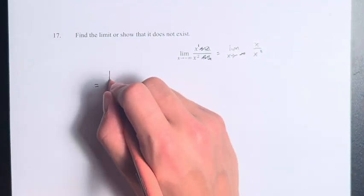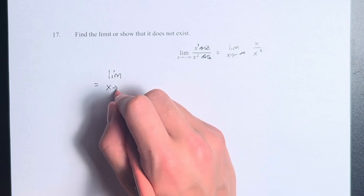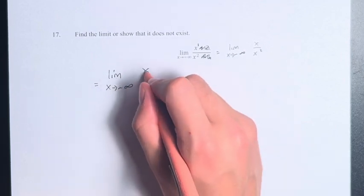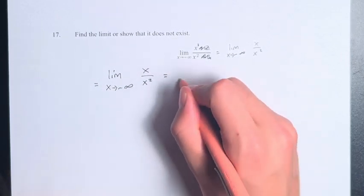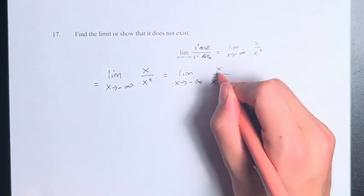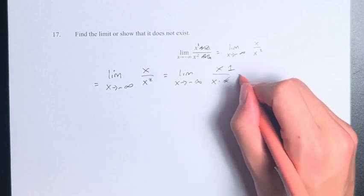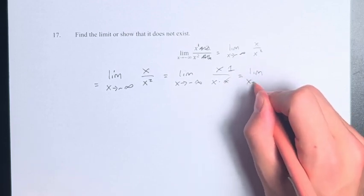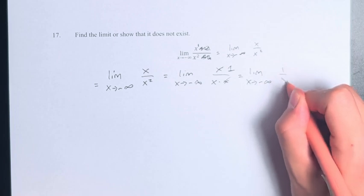But we have the limit, I'll write it a little bit clearer, as x approaches negative infinity of x over x squared. This is the limit as x approaches negative infinity of x over x times x. These cancel, and we're just left with the limit as x approaches negative infinity of 1 over x.